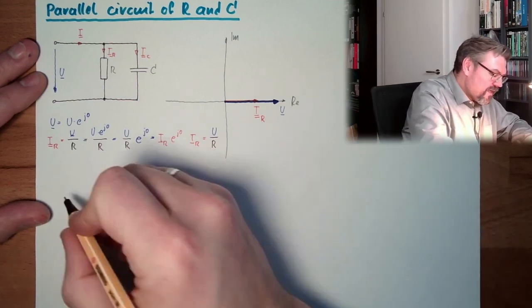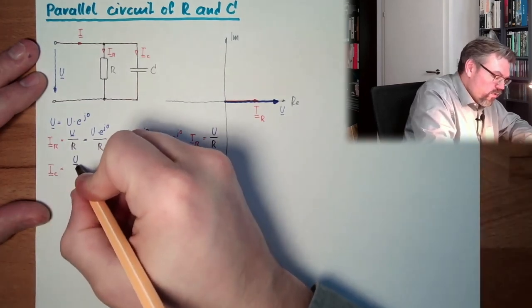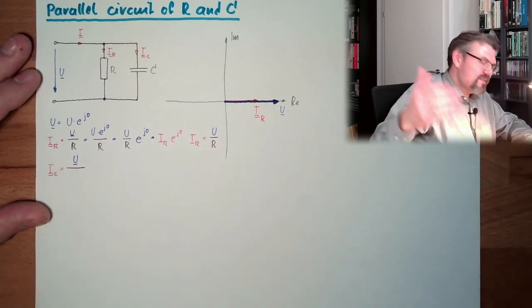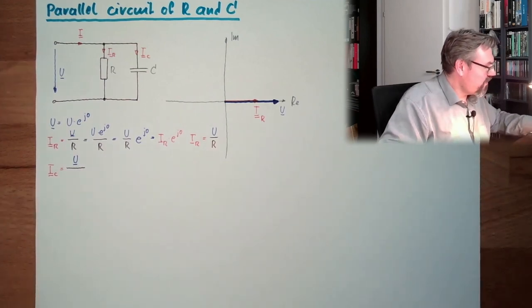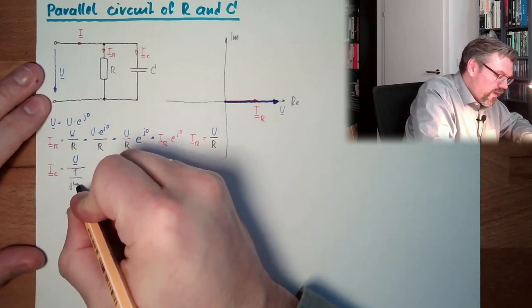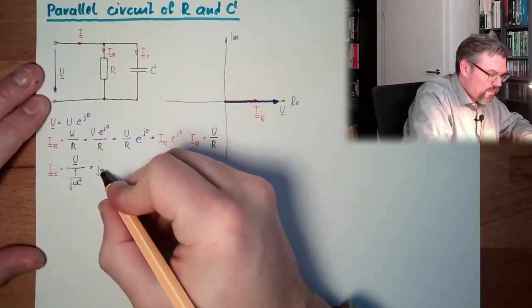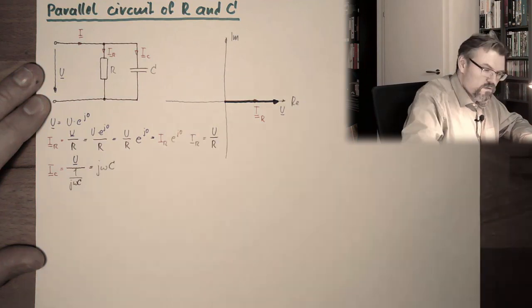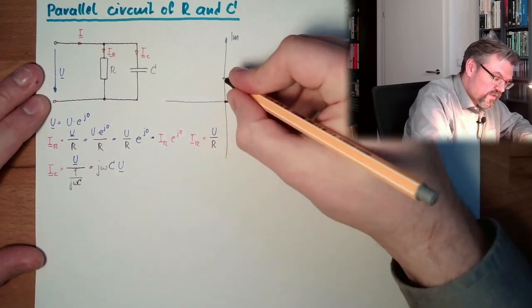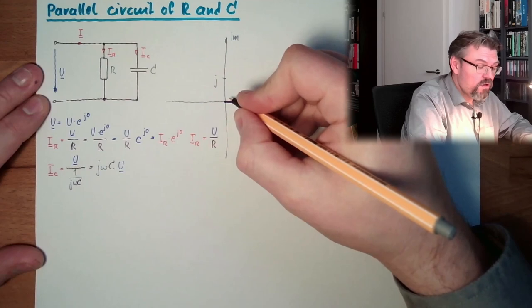Next thing is IC, current through my capacitor. And again, according to Ohm's law, U divided by, and now we have to use the complex resistance of our capacitor, which is 1 divided by jωC. We have a nice double fraction here. I will solve this double fraction. jωCU. j has an absolute value of 1 and an angle of 90 degrees plus.